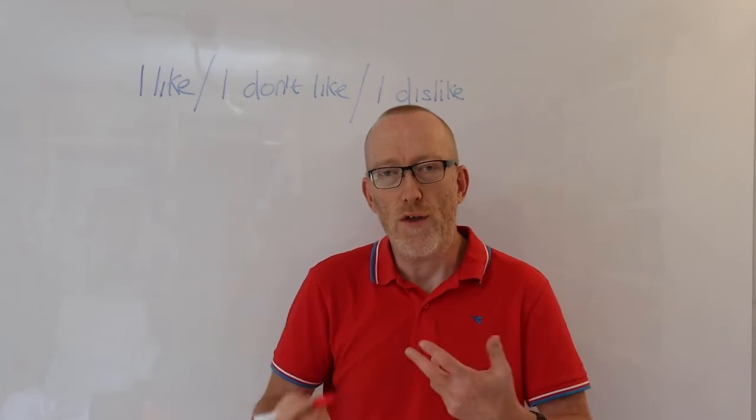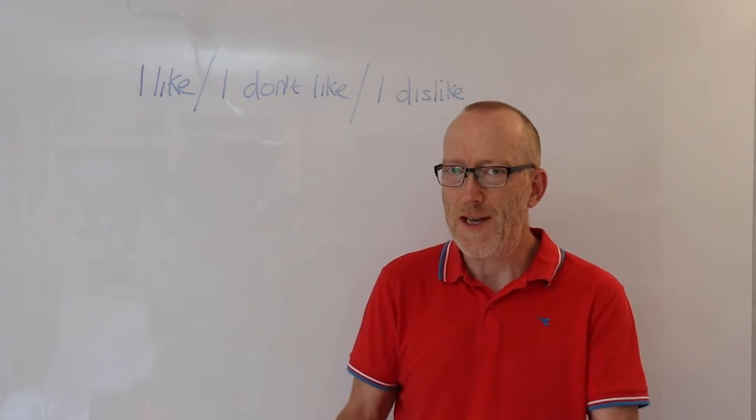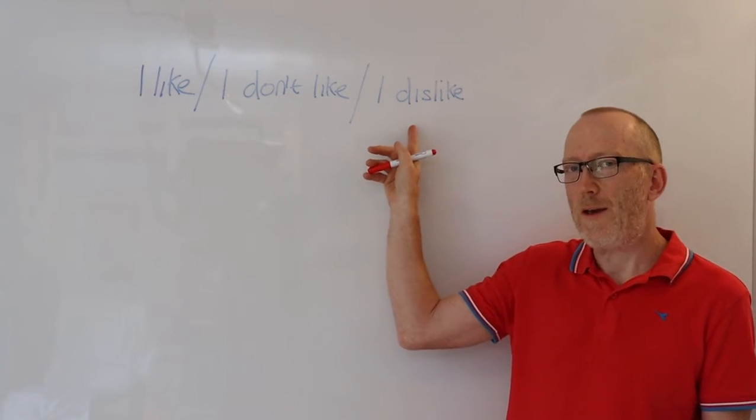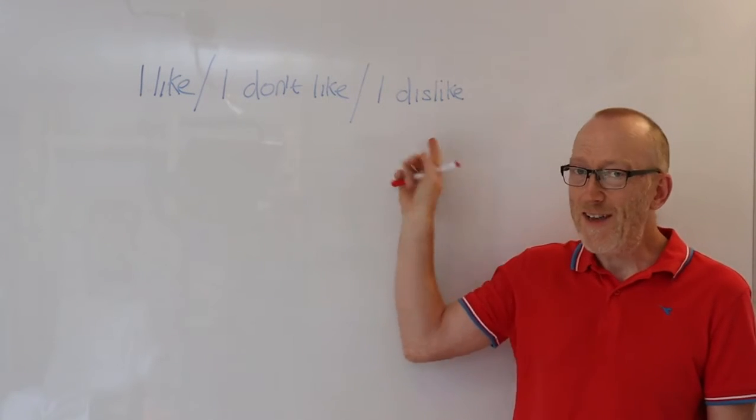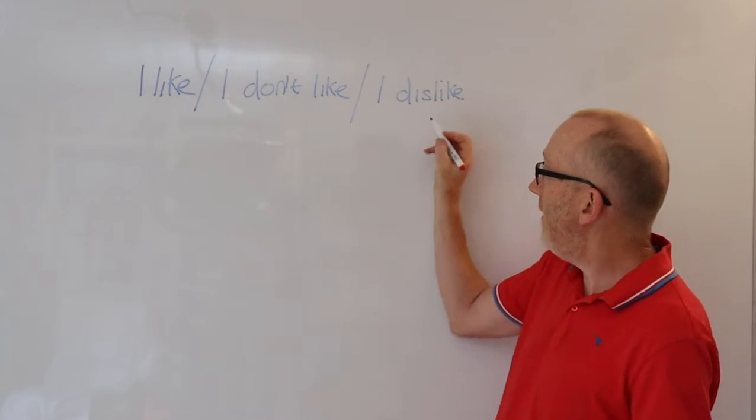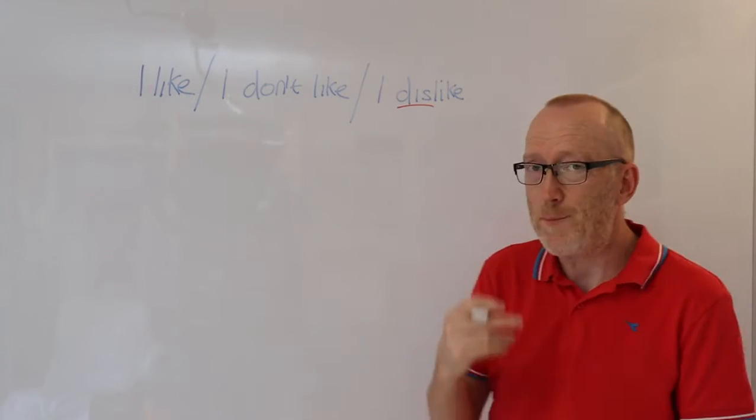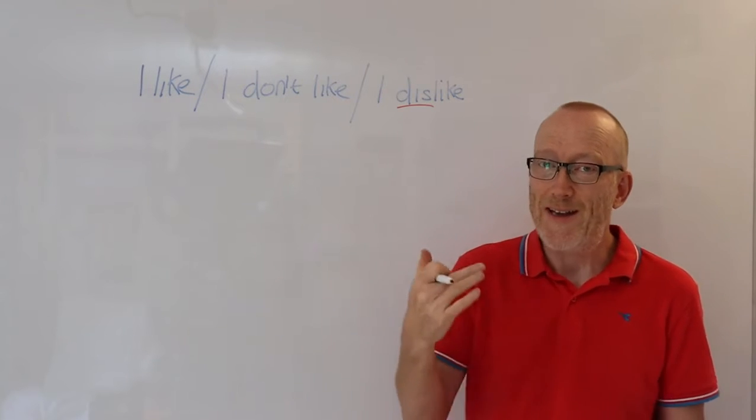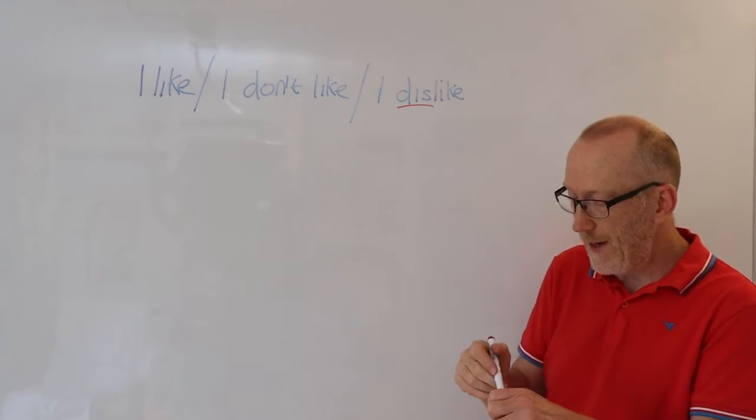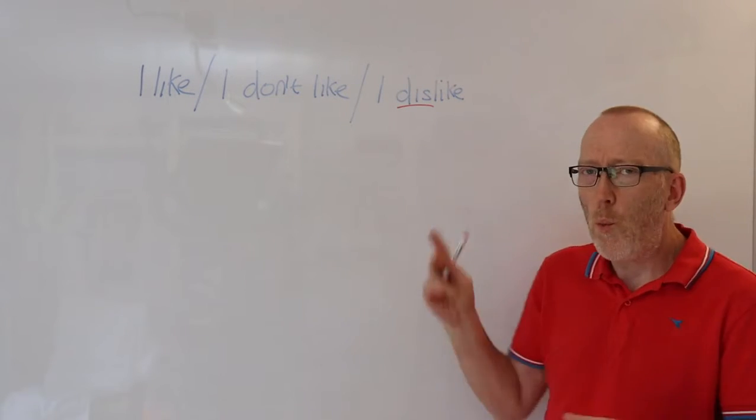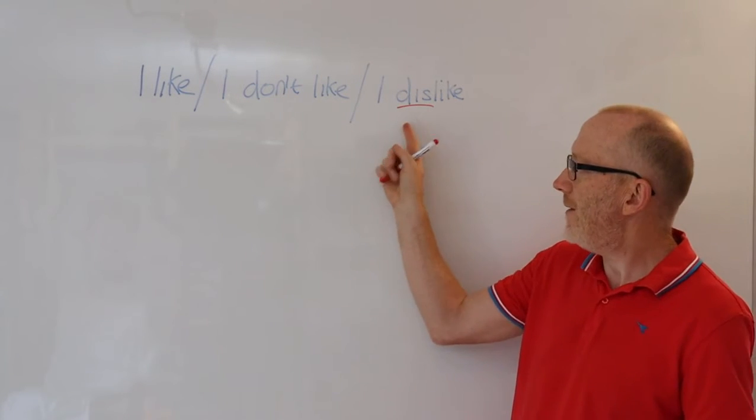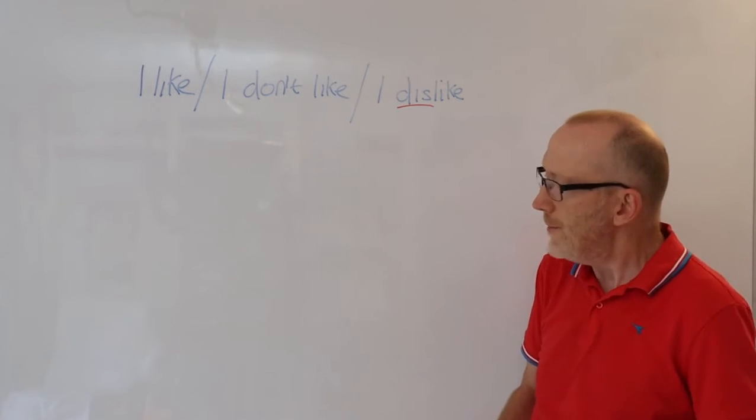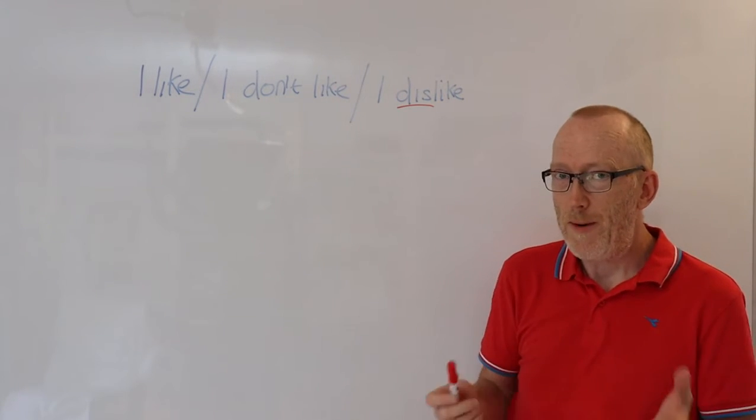But we also have other ways to express the same ideas. And here you can see I have this word dislike, which uses 'dis' as a prefix to the word like, which gives the word a negative meaning. I dislike pizza. But what is the difference between dislike and don't like? What do you think?